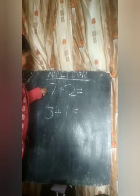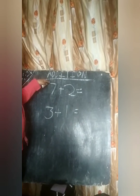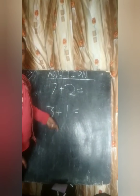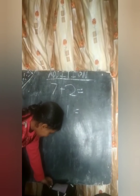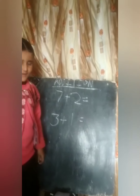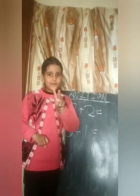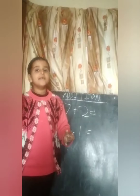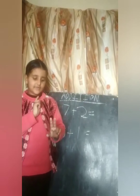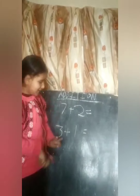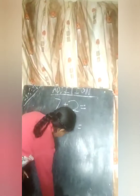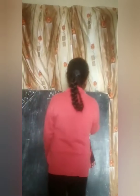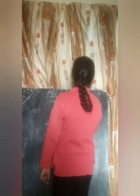7 plus 2. 7 in ones, 2 in ones. 7, 8, 9. Write the number 9.